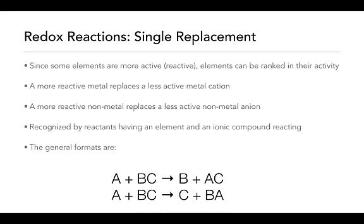In the general formats, we have two different patterns. In the first, A represents a metal, B a metal cation, and C a non-metal anion. A and B trade places — the metal A replaces metal B, B ends up by itself, and you form the ionic compound AC. In the second pattern, A is a non-metal, B is a cation, and C is a non-metal. Here A and C trade places — C ends up by itself, and you form the ionic compound BA, with the metal listed first in the formula.